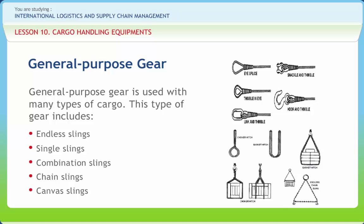Combination slings combine two or four single slings to form a bridle, basket or choker sling. Combination slings can lift virtually any type of load. Chain slings are used mainly for handling steel rails, pipes, beams and angles, and are used in bridles or single legs. A canvas sling is a rope sling with a section of canvas sewn between the ropes.